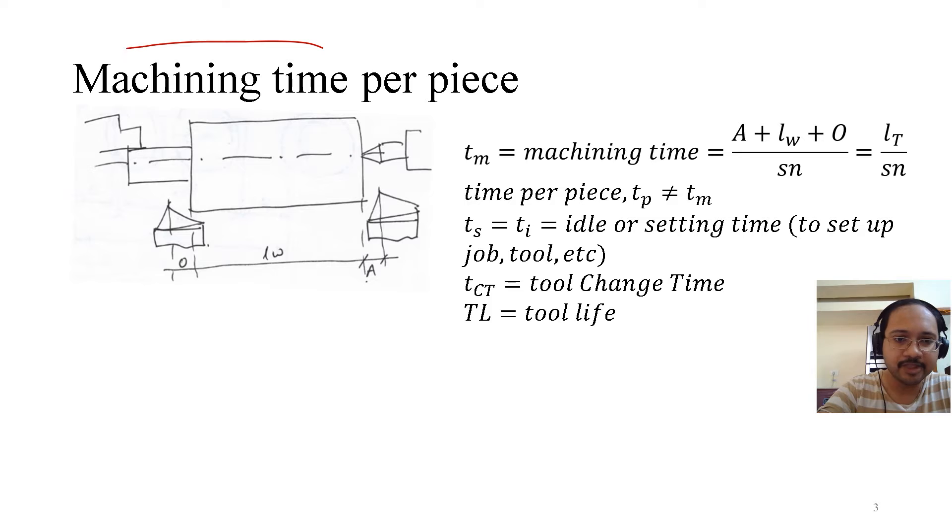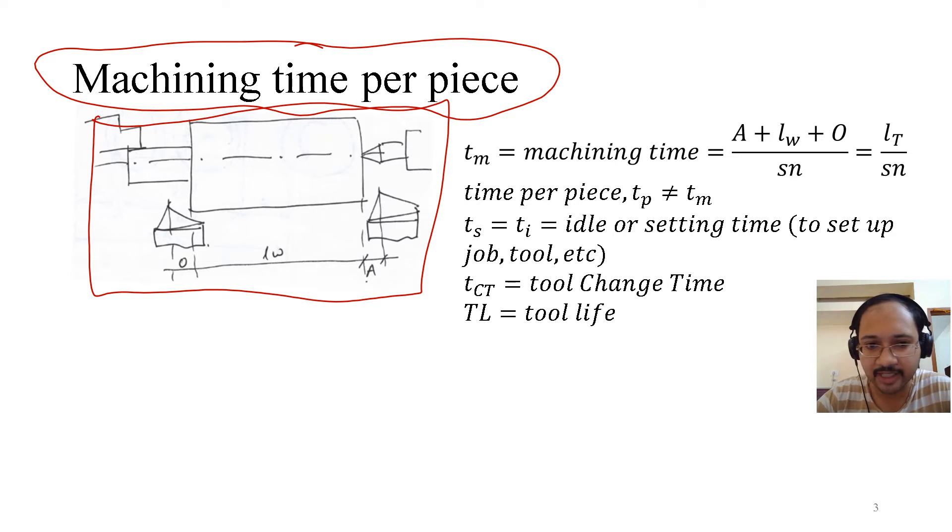Now coming to machining time per piece. So obviously machining time per piece means we are talking about minute per piece. This diagram we have already seen in the machining time lectures. There is a tool, the tool is being fed toward left, it has an approach, then there is the workpiece length and then there is the overtravel. So that gives the machining time equals to A plus LW plus O divided by the feed rate, that is feed in millimeter per revolution times the rotation of the workpiece.